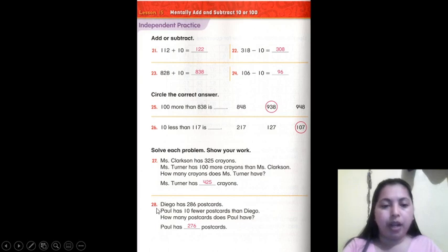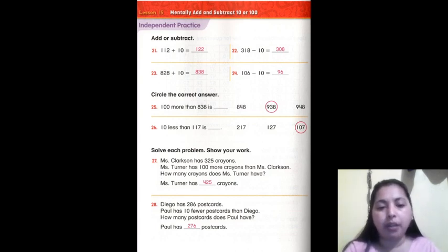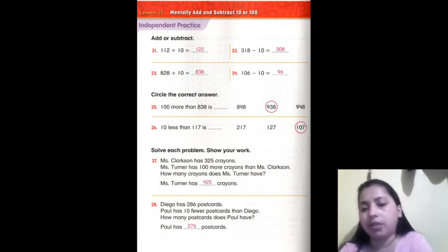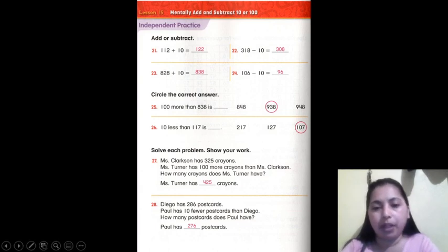Number 28: Diego has 286 postcards. Paul has 10 fewer postcards than Diego. How many postcards does Paul have? Paul has 276. 286 minus 10 equals 276. Follow me to the next page please.